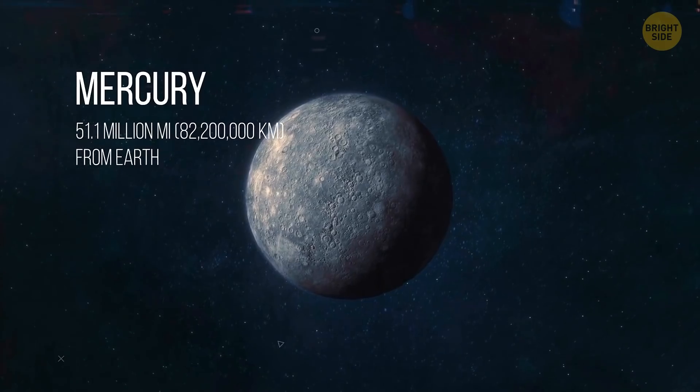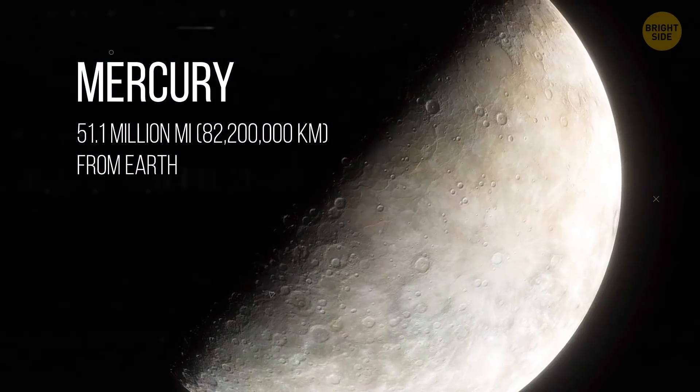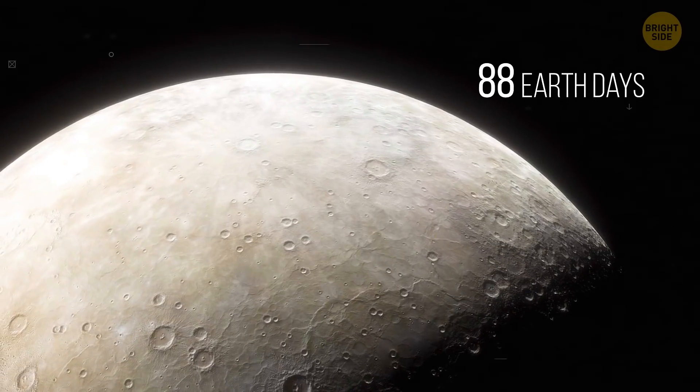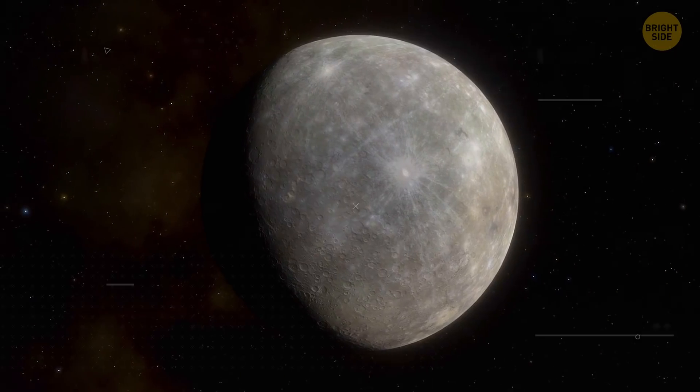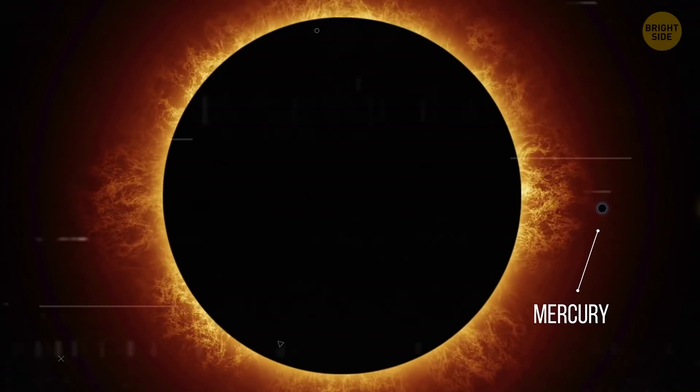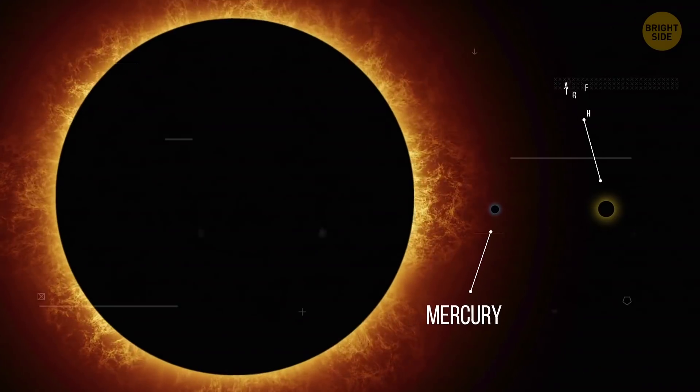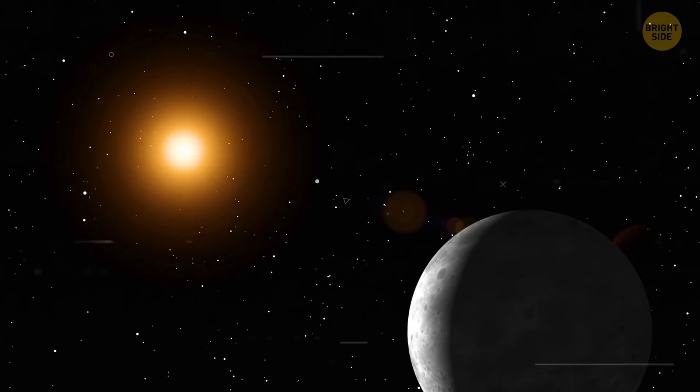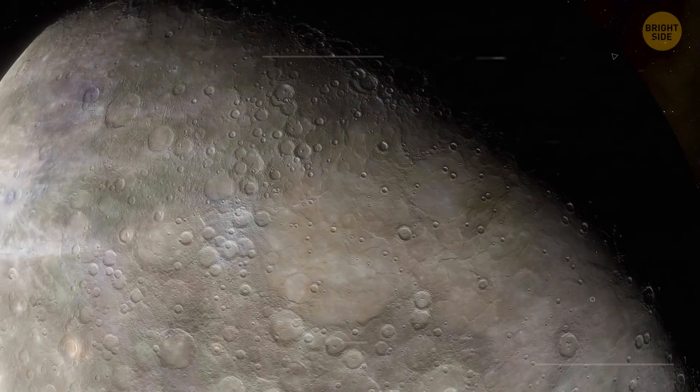Mercury. It doesn't have any moons or rings, and we're talking about the smallest planet in the whole solar system. A year lasts only 88 days. So, if you lived there, you'd have a lot of birthdays. Mercury is the closest planet to the Sun, but it's actually not the hottest. That prize goes to Venus. Temperatures on Mercury don't get as high as on Venus because it doesn't have an atmosphere to trap heat from the Sun.